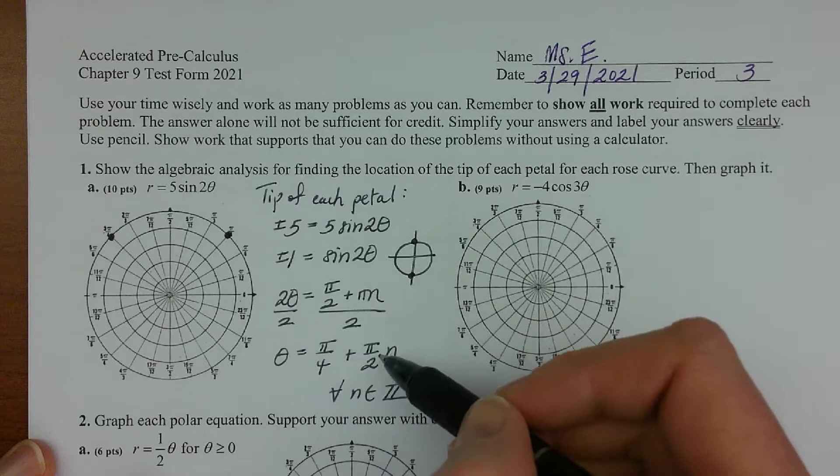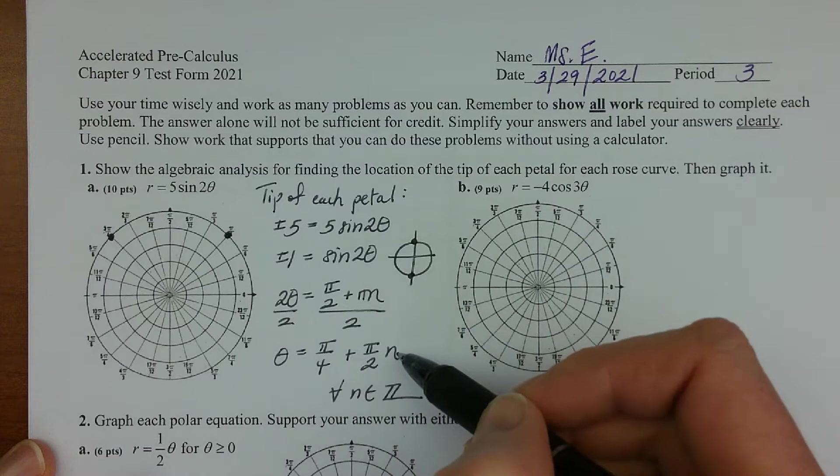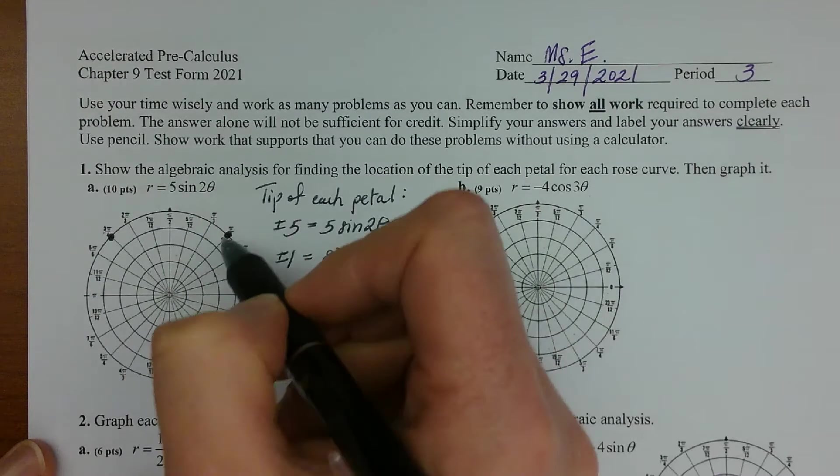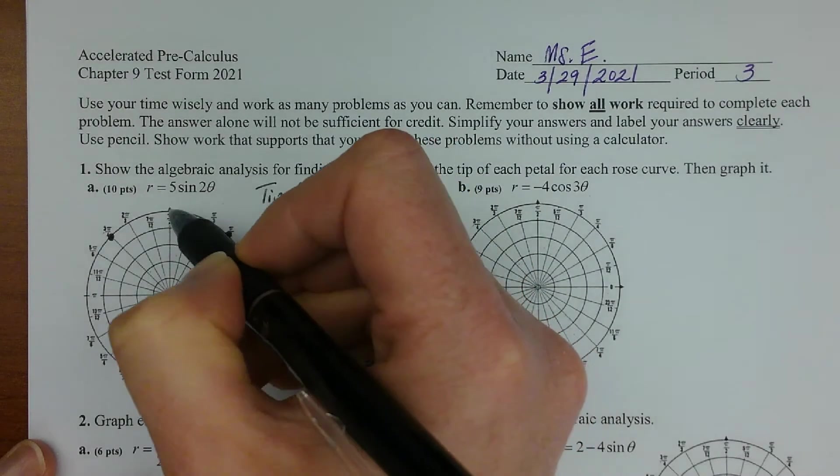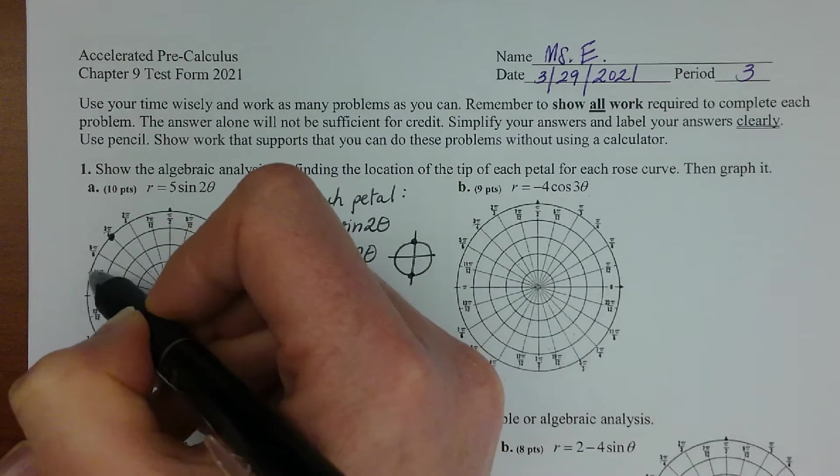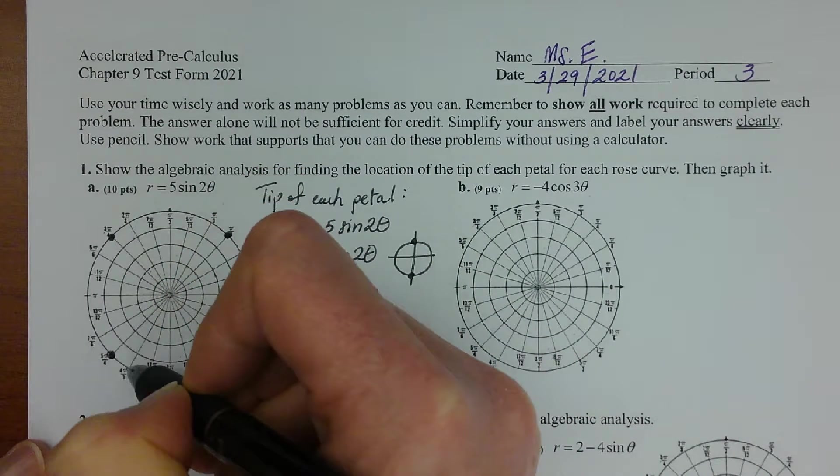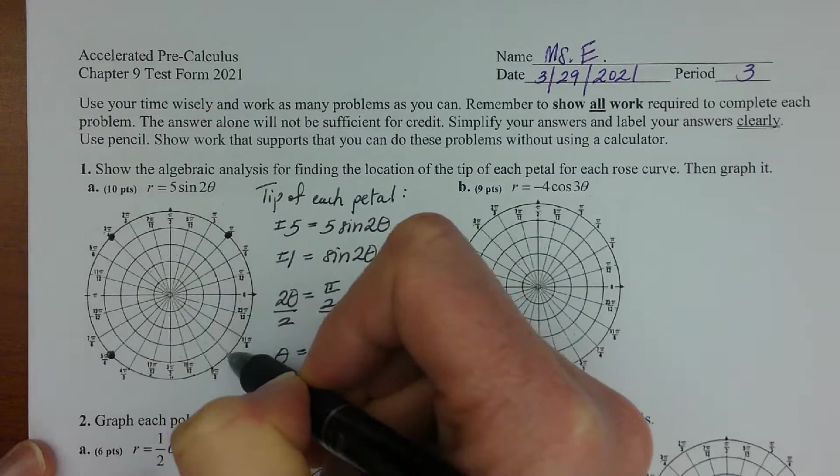So at three pi over four I'd have a tip of a petal. And then you can also think of this as just starting at pi over four and adding a fourth of the circle, multiples of the fourth of a circle. So you could also count the spokes one two three four five six, and then continue around.